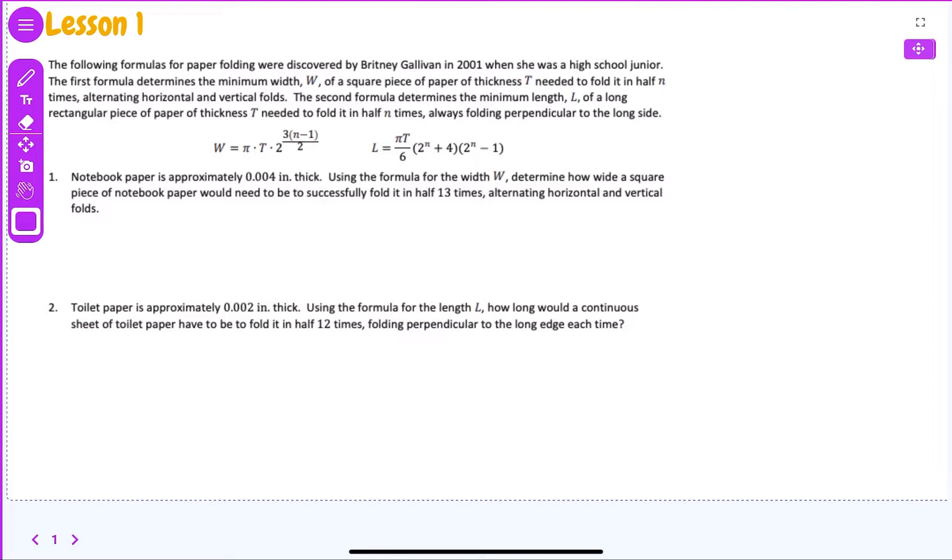This is Alpha 2, Module 3, Lesson 1. The following formulas for paper folding were discovered by Brittany Gallivan in 2001 when she was a high school junior. The first formula determines the minimum width W of a square piece of paper of thickness t needed to fold it in half n times alternating horizontal and vertical folds. The second formula determines the minimum length of a long rectangular piece of paper of thickness t needed to fold it in half n times always folding perpendicular to the long side.